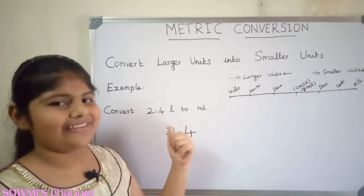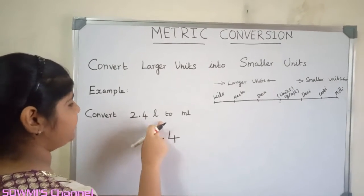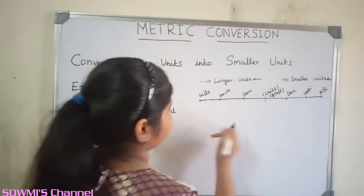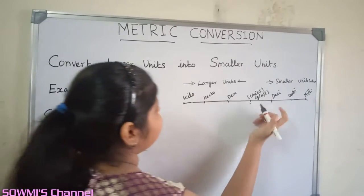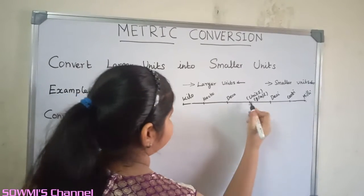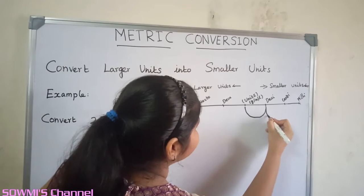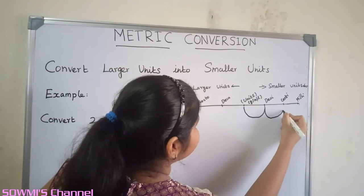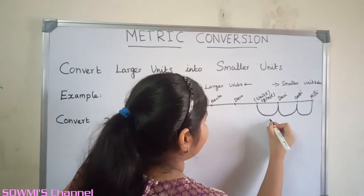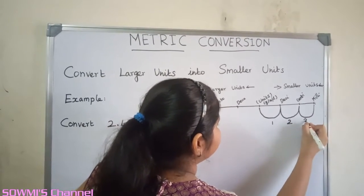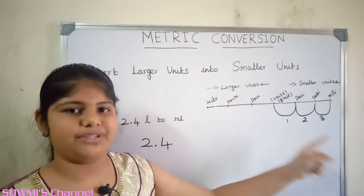Let us see another example. Convert 2.4 liters to milliliters. First we have to count the jumps from liters to milliliters. There are three jumps to the right.